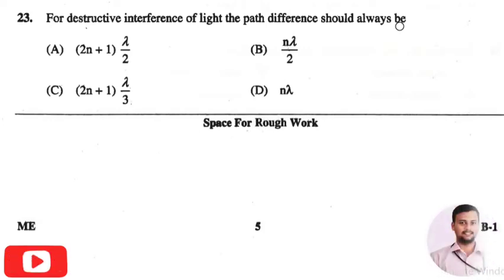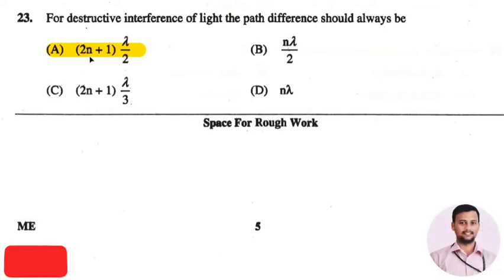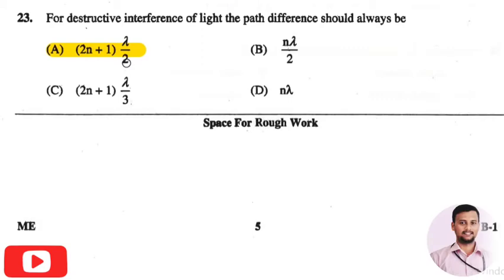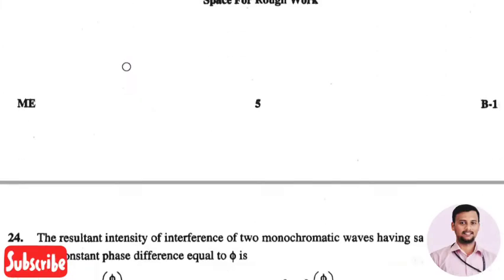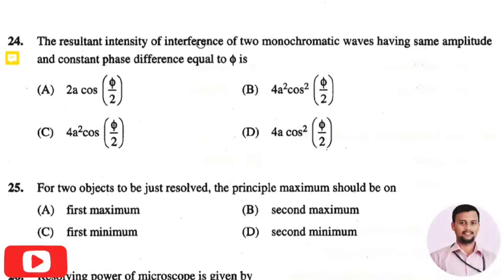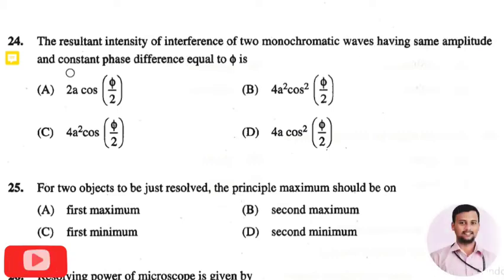The next question is: for destructive interference of light, the path difference should always be — the right answer is option one: the path difference should always be (2n + 1) × λ/2.